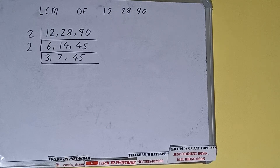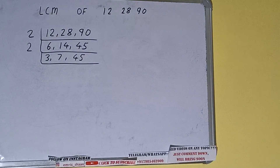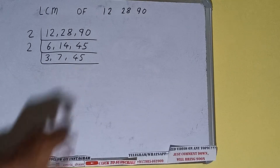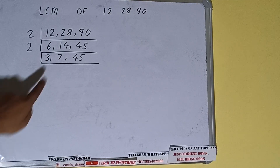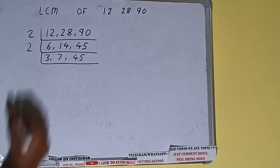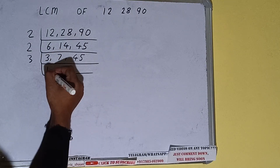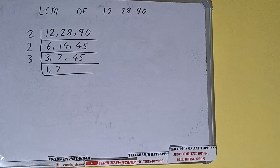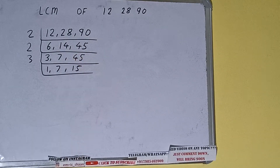Now again we check — none of the numbers are divisible by 2. So we'll move to the next lowest prime number, that is 3. The first and the last number are divisible by 3, so we'll divide, and the second number is not divisible by 3, so we'll copy it down. This will become 1, this will remain 7, and this number will become 15.